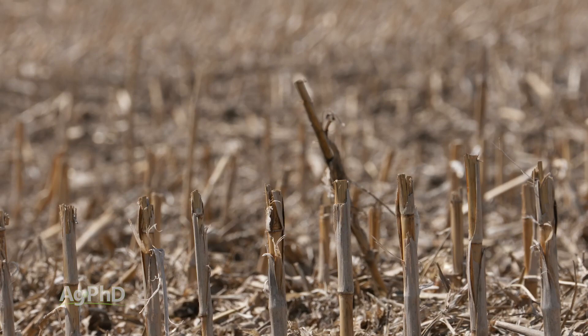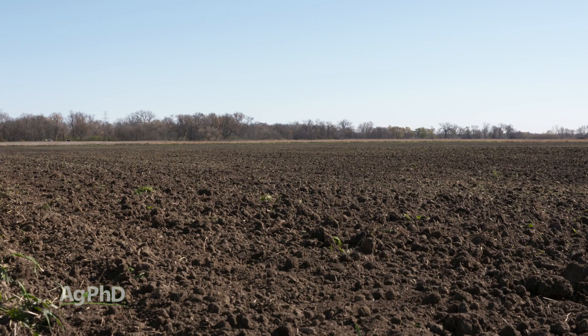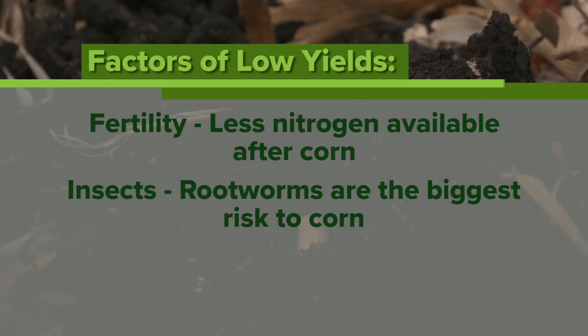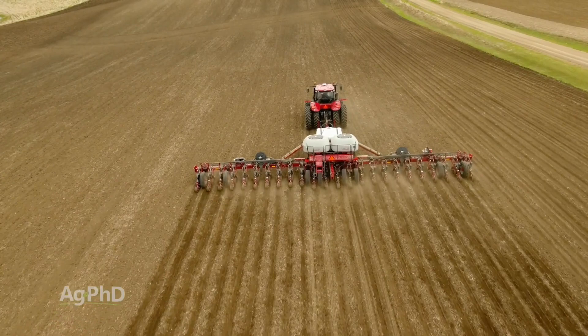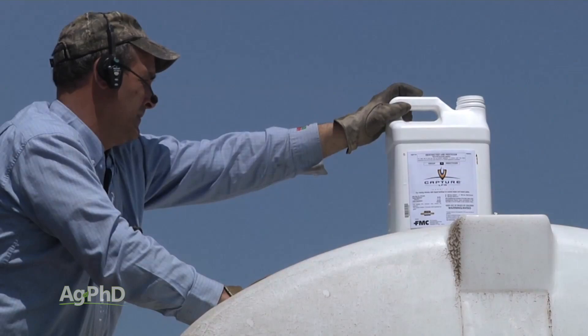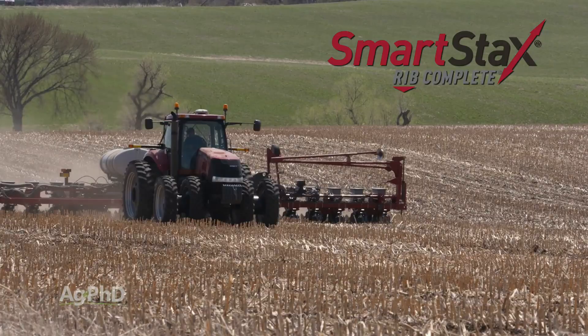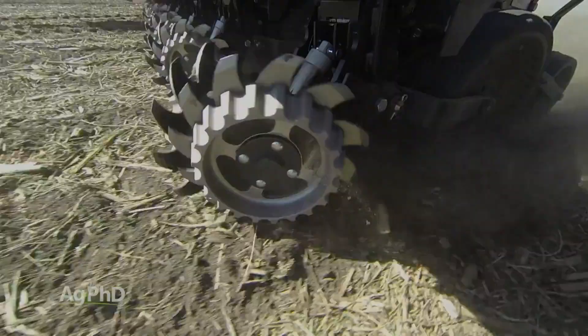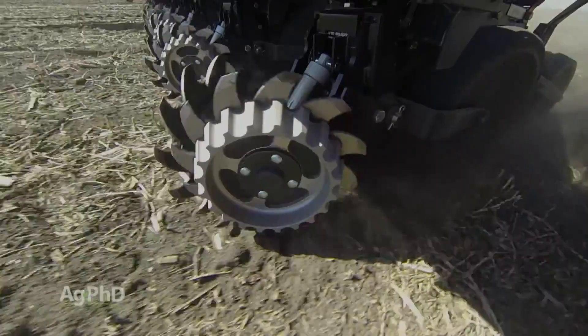On the insect side, the number one thing is rootworms. You have to have a plan for corn rootworms — there is no rescue option. You have to do it early; you have to start either at planting time with a traited product or with insecticide or both. On our farm we're using SmartStax and at least a reduced rate of insecticide whenever we go continuous corn. Getting seed placement done just right also makes a big difference.